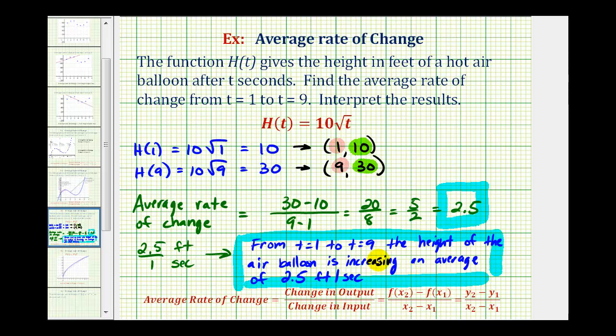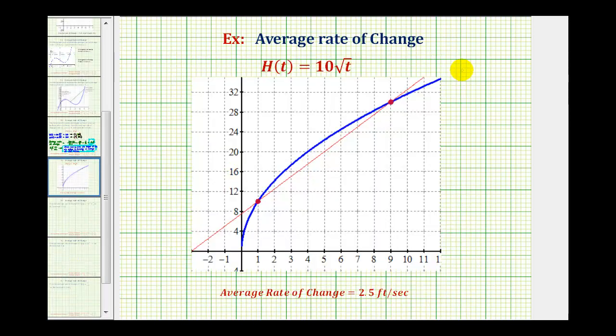Let's take a look at this graphically as well. The blue graph is the graph of our height function, and the slope of this red line represents the average rate of change. The slope was 2.5, which meant on average, the height is increasing at 2.5 feet per second on this interval. I hope you found this explanation helpful.